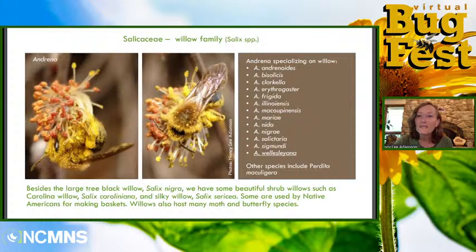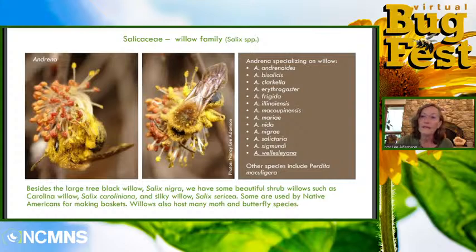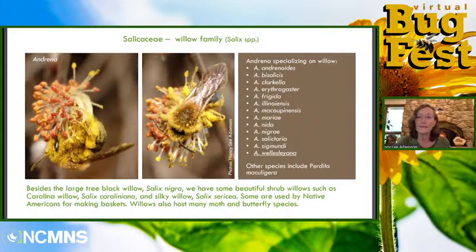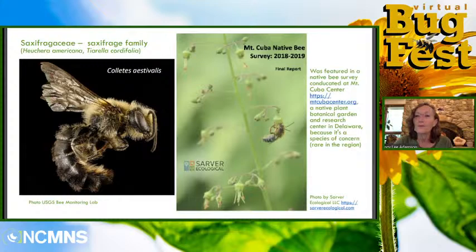A lot of us think of really big black willow trees when we think of the willow family, but we have some beautiful shrub willows that can make nice landscape plants as well. Around here we just have two — the Carolina willow and the silky willow — but farther north there's much greater diversity. The bees get totally covered in the pollen. Some willow twigs are used by Native Americans for making baskets, and willows are also hosts for many moth and butterfly species.